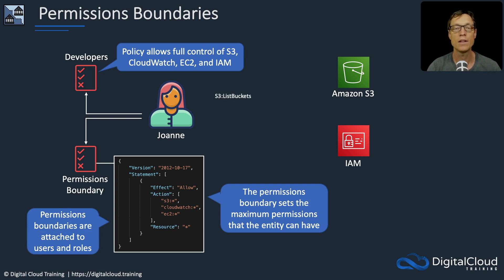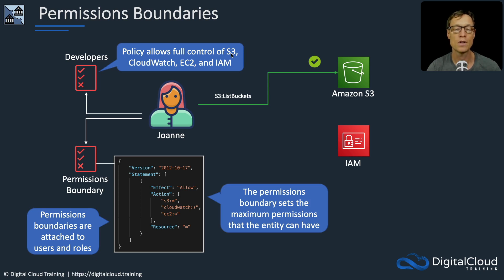Let's say that now Joanne attempts to list buckets on Amazon S3. She's going to be able to, because she has two things: she has S3 full control permissions, and the permissions boundary also allows all actions on S3.